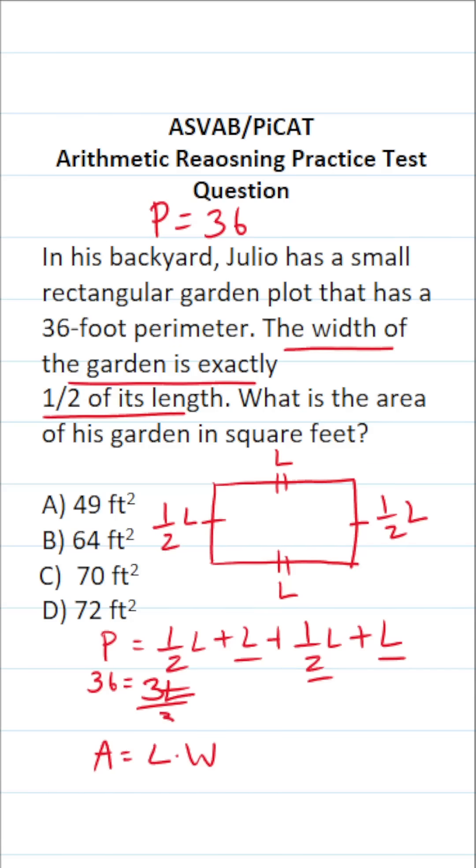Now we can solve for L by dividing both sides by 3. This crosses out. This says L equals... What is 36 divided by 3? 3 divided by 3 is 1, 6 divided by 3 is 2. So we know the length of this garden is 12 feet.